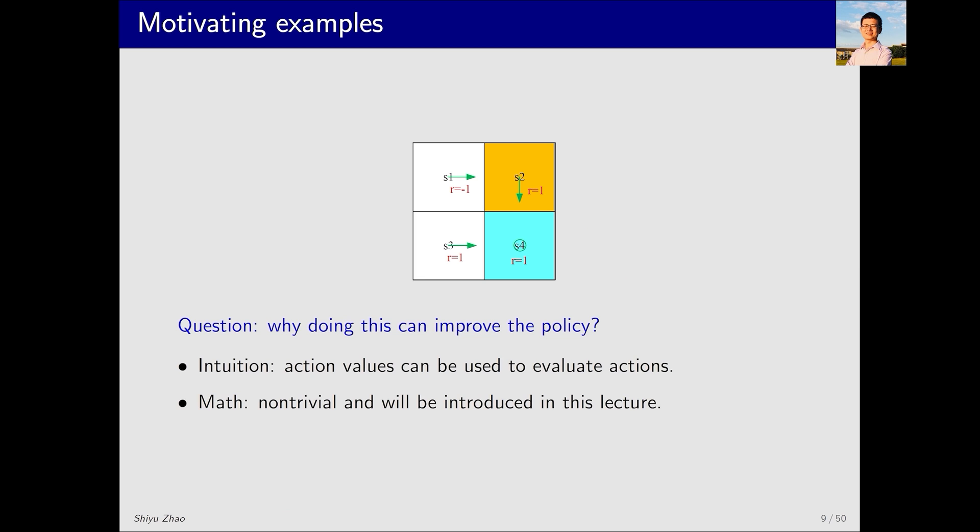Why does choosing the action with the highest action value lead to a better policy? Intuitively, this is because action values can be used to evaluate actions. If I select an action with a high action value, it means I can expect to receive a lot of rewards. And consequently, the policy will be better. This is quite easy to understand intuitively.